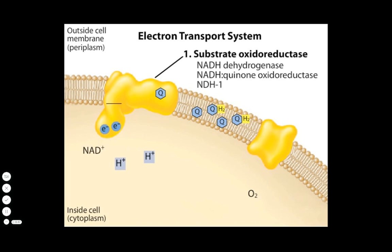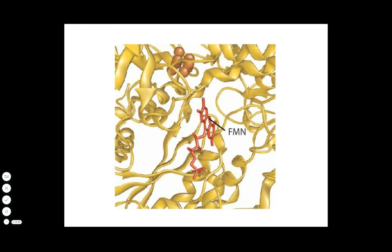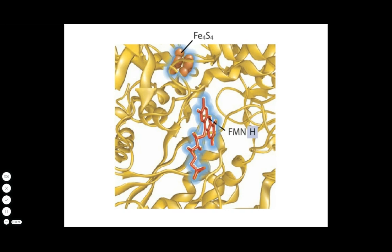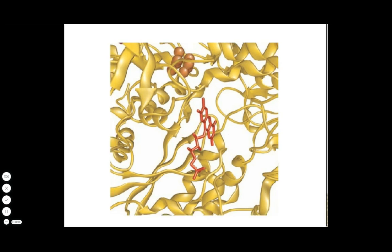NADH donates electrons to a flavin mononucleotide (FMN) molecule within NDH1. As the electrons reduce FMN, the molecule also takes on two protons to balance the charge, becoming FMNH2. In its reduced form, FMNH2 can donate electrons one at a time to an adjacent iron-sulfur center that is a stronger electron acceptor. The iron-sulfur center passes the electron on to the next iron-sulfur center, and through a series of redox reactions the electron passes from one center to the next in the NDH1 complex.